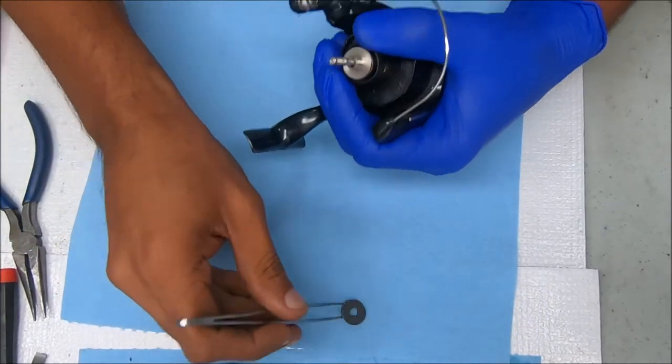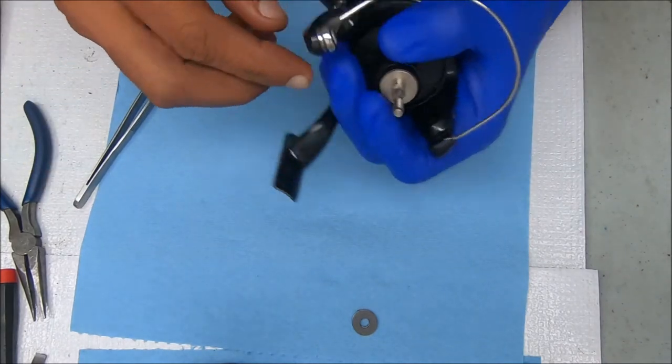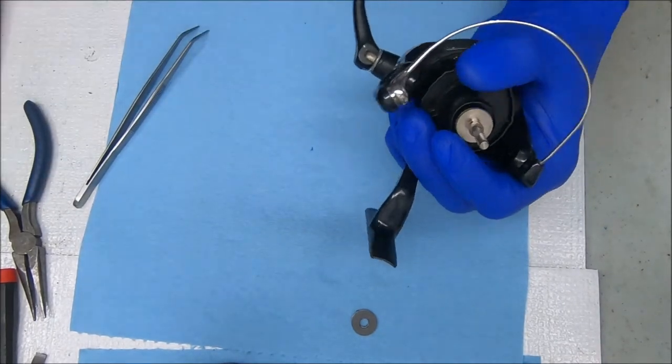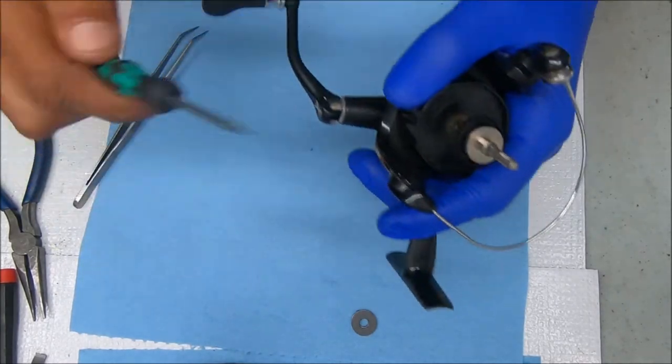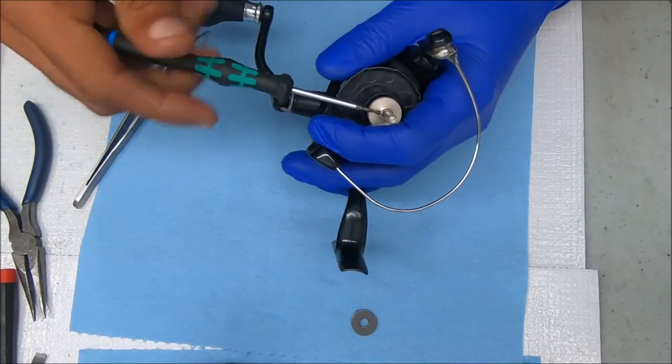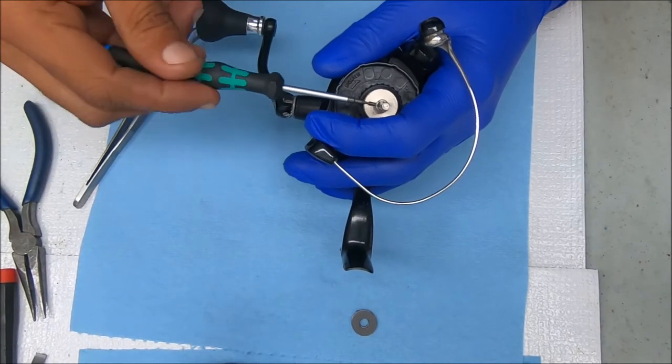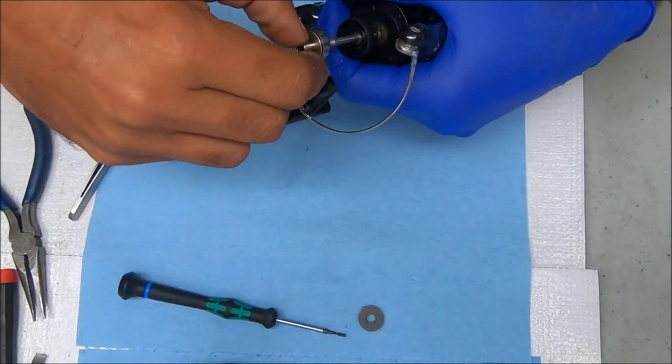Just popping off these washers. And now we have to remove that screw. There's a set screw inside here that you have to take out. So you just pull that off.